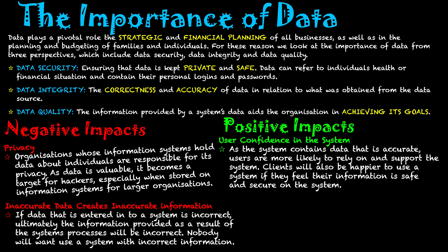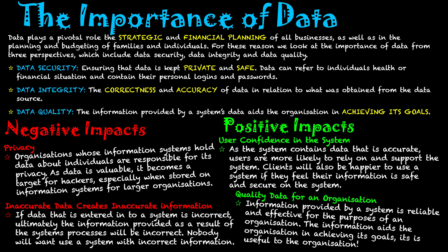The other positive point is quality data for an organization. The information provided by the system is reliable and effective for the purposes of the organization, aids the organization in achieving its goals, and is useful to those who use the system. It allows them to achieve the purpose of the user and hopefully makes their lives a lot easier due to the efficiency of the system and the quality of the information coming out of it. So I hope this video has given you an understanding of the importance of data under those three areas: data security about keeping private data safe, data integrity about ensuring that data on the system is correct and up to date, and data quality — that the actual data on the system aids people in achieving their goals.